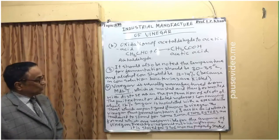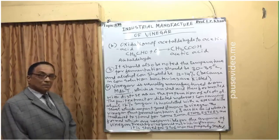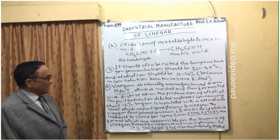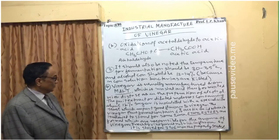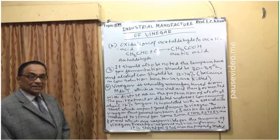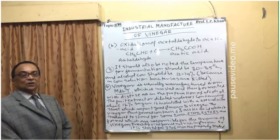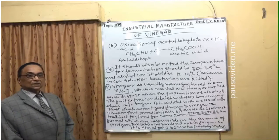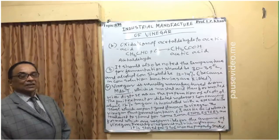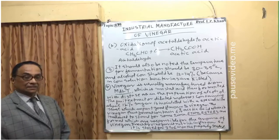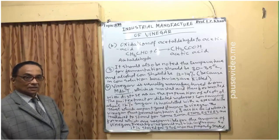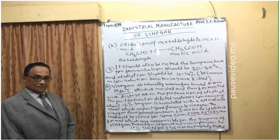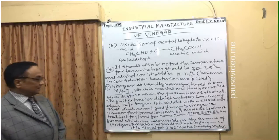Vinegar is usually manufactured in industries from malt, which is mashed and then fermented with diastase. Diastase is responsible for converting malt into glucose, and then zymase will convert the selected yeast into ethyl alcohol, and then other bacteria convert it into acetic acid.